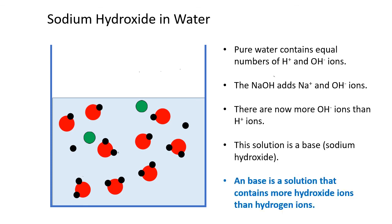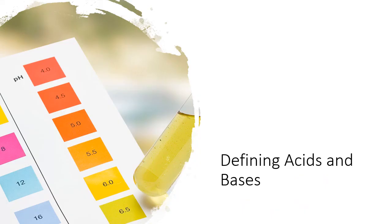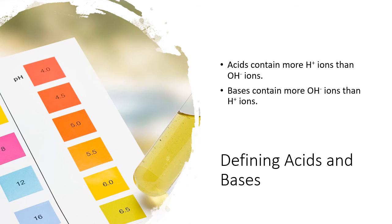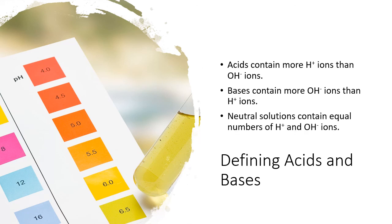So to define a base a different way: a base is a solution that contains more hydroxide ions than hydrogen ions. So now we can define acids and bases a different way. An acid contains more hydrogen ions than hydroxide ions. A base contains more hydroxide ions than hydrogen ions — like water. So there you go: a new way of thinking about acids and bases.